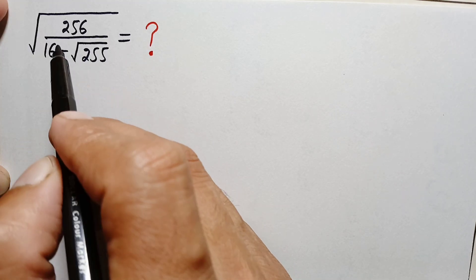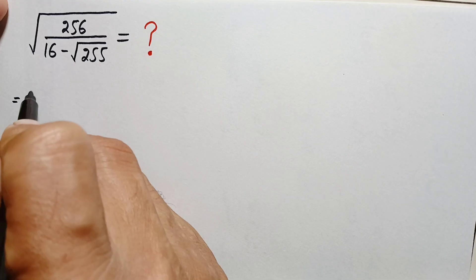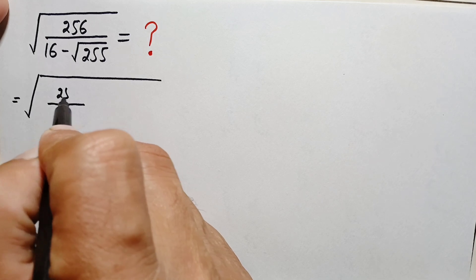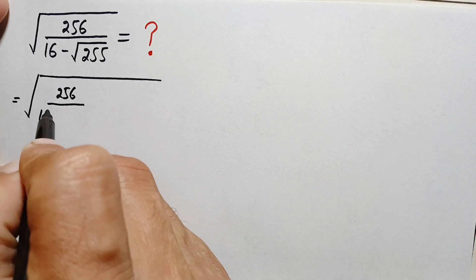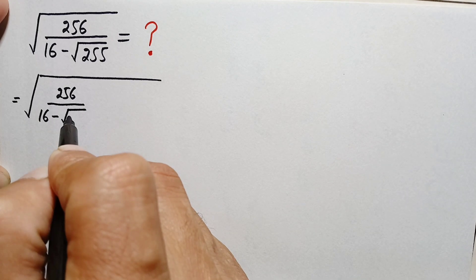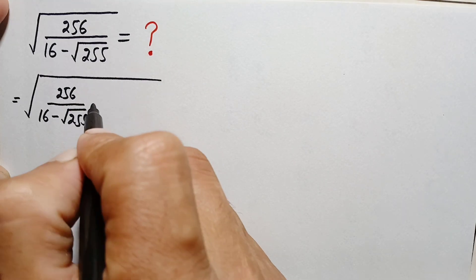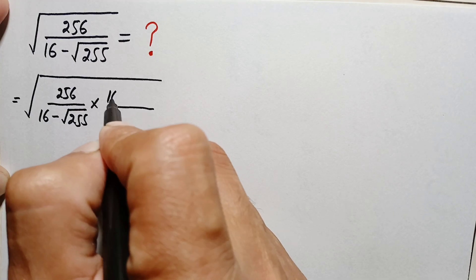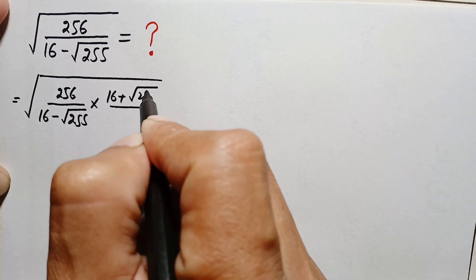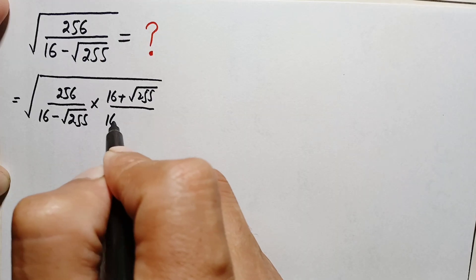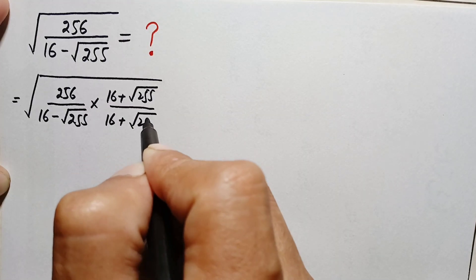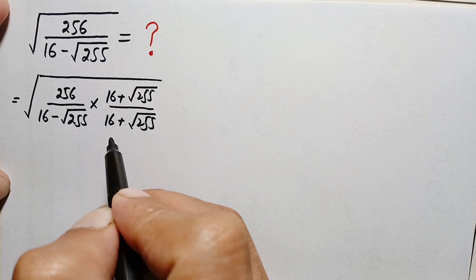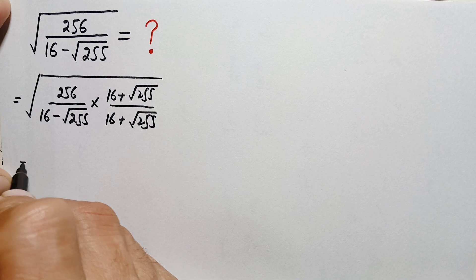First of all, we can write this expression inside the square root as: whole square root of 256 divided by 16 minus square root of 255. Here we multiply and divide this expression with the conjugate of this number, that is 16 plus square root of 255, and also divide by this number 16 plus square root of 255.